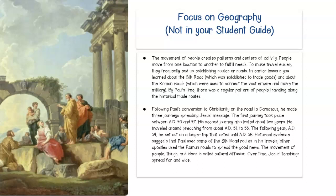This is in your OMS, Focus on Geography. The movement of people creates patterns and centers of activity — that's cultural diffusion. People move from one location to another to fulfill needs. To make travel easier, they frequently end up establishing routes or roads. In earlier lessons, you learned about the Silk Road, which was established to trade goods, and about the Roman roads, which were used to connect the vast empire and move the military.